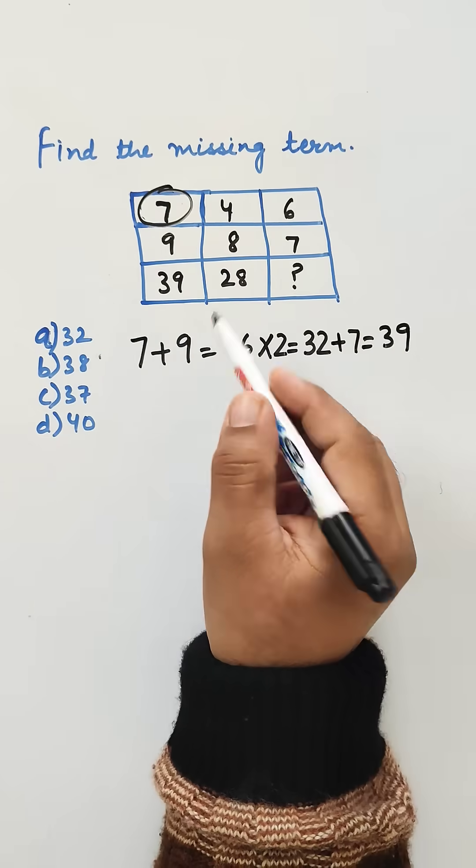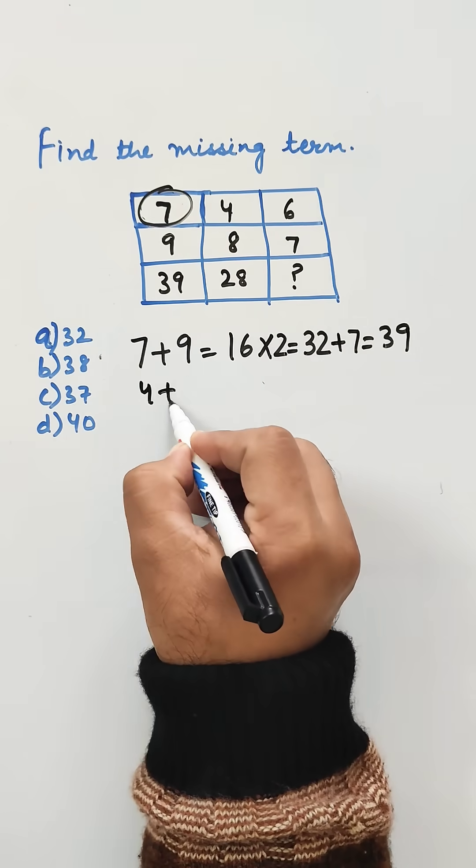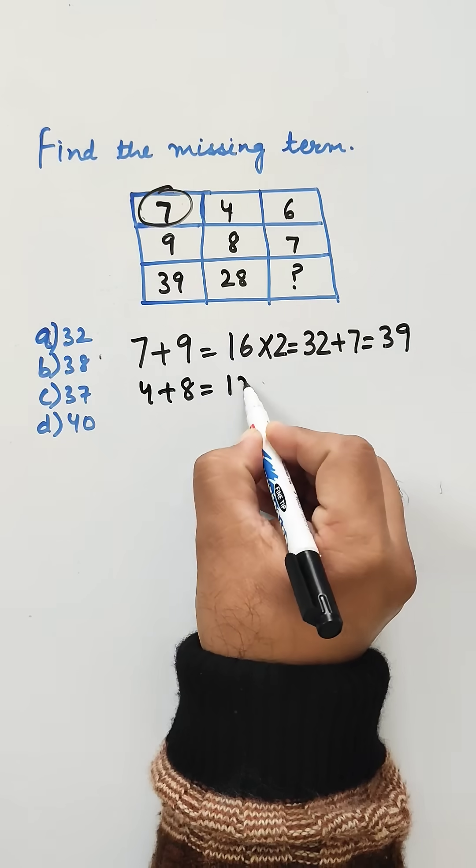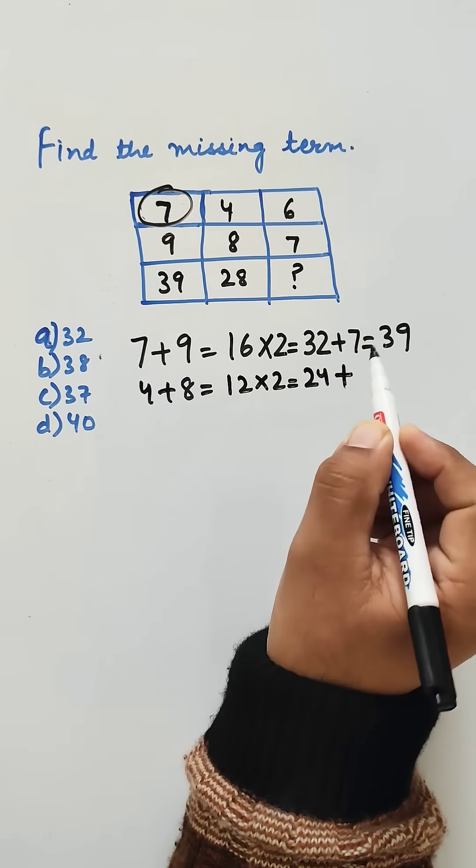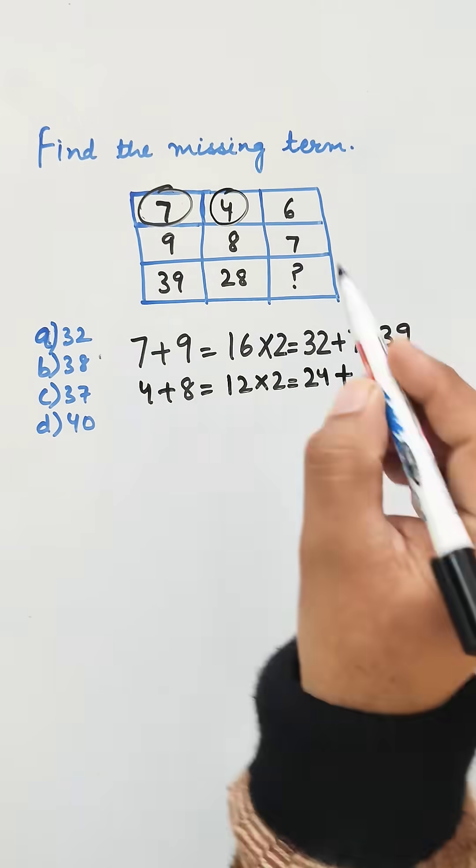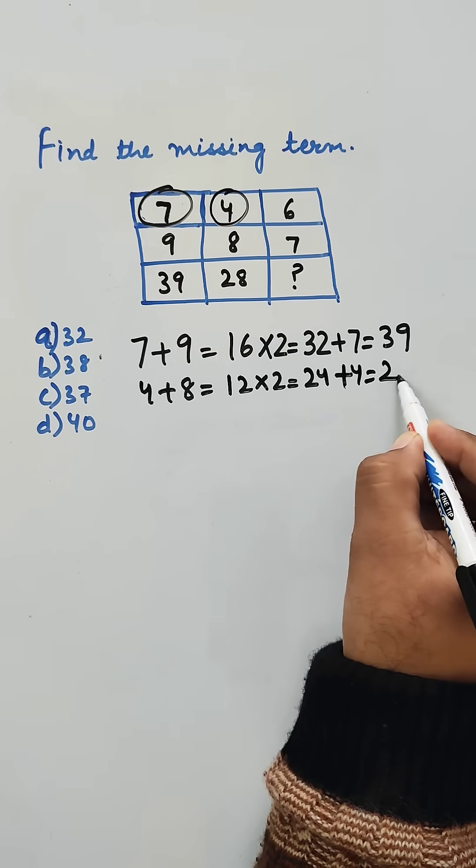Now let us try with another column. 4 plus 8 is 12, 12 into 2 is 24, and if we add this 4, we get 28.